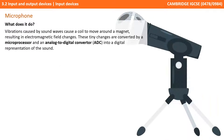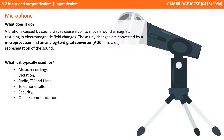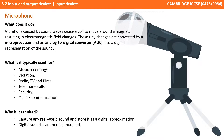Next up are microphones. Vibrations caused by sound waves cause a coil to move around a magnet, resulting in electromagnetic field changes. These tiny changes are converted by a microprocessor and an analog-to-digital converter into a digital representation of the sound. Microphones have many typical uses — from making music recordings to dictation, radio, TV and films, telephone calls, security, and video-based forms of online communication. They capture real-world sound and store it as a digital approximation, and once stored the digital sound can be further adjusted and modified.